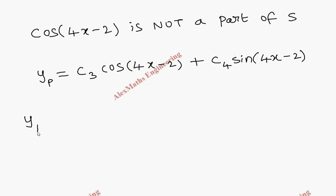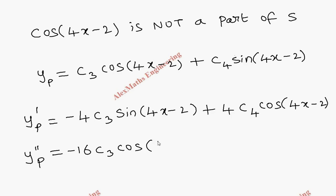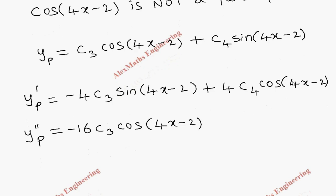Now we find the derivatives. The first derivative gives y'p = −4c3·sin(4x − 2) + 4c4·cos(4x − 2). Then the second derivative y''p = −16c3·cos(4x − 2) − 16c4·sin(4x − 2).